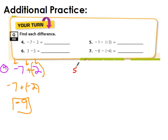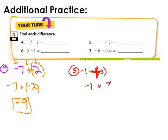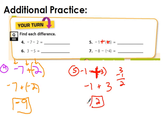For number five: negative 1 minus negative 3. Whenever we have a double negative — a minus a negative — it always just becomes plus a positive. You can combine those two negative signs into one big positive. So this is really negative 1 plus positive 3. Different signs means I subtract and keep the sign of the bigger number — the answer is positive 2.